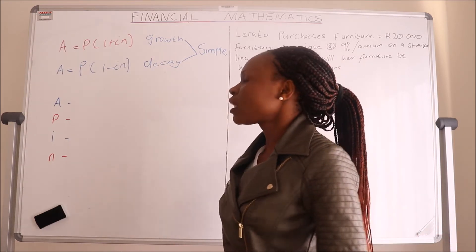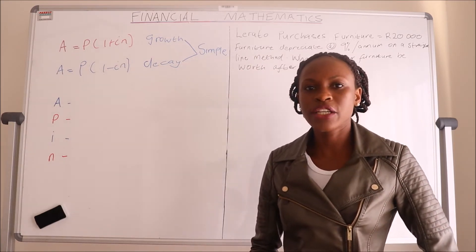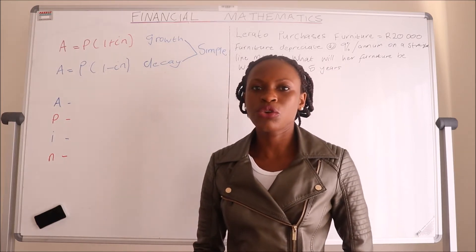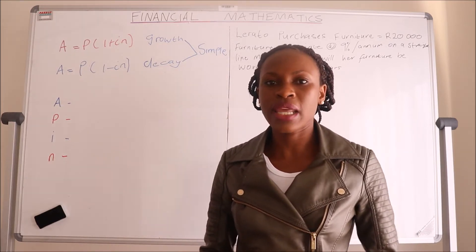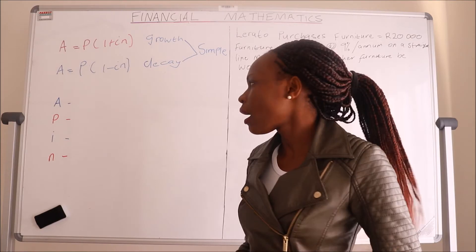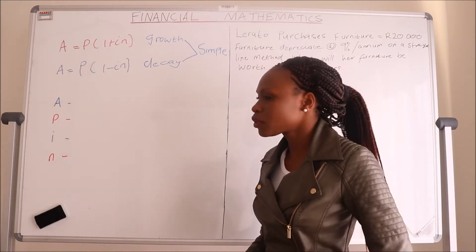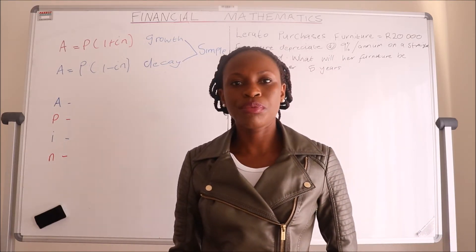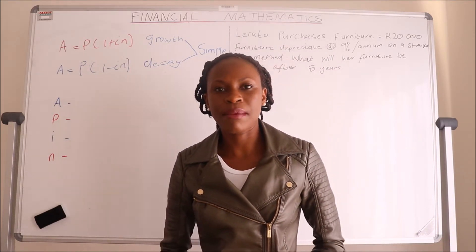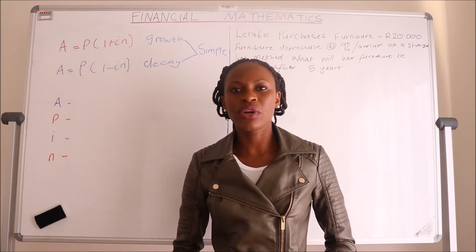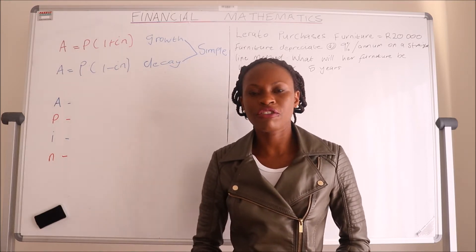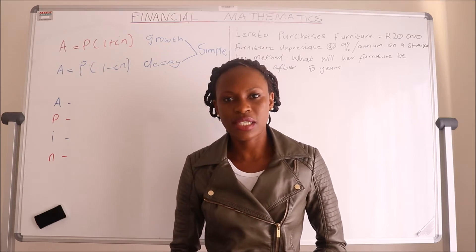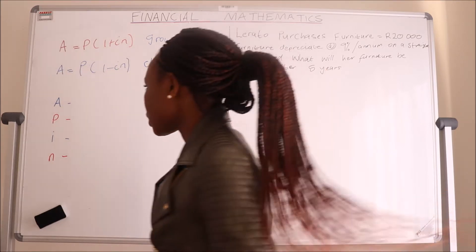For simple growth, that's when you have invested your money into any account and it gains interest, so you receive more money at the end of a certain period. With simple decay, it's when you have purchased goods which depreciate over time, and at the end of a certain period the goods are worth less than the initial amount you paid for them.